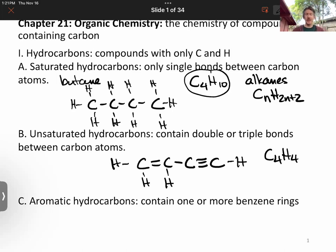Aromatic hydrocarbons contain one or more benzene rings. A benzene ring has six carbons. It's going to be one, double bond C, single bond C, double bond C, single bond C, double bond C. That's six carbons.